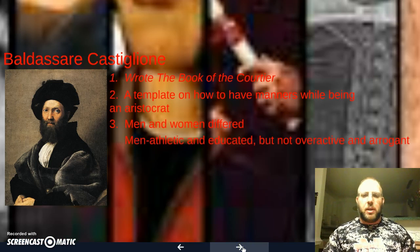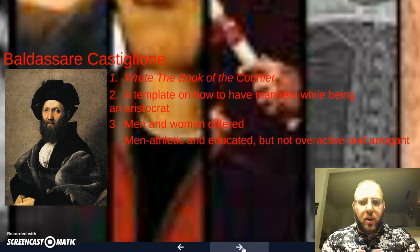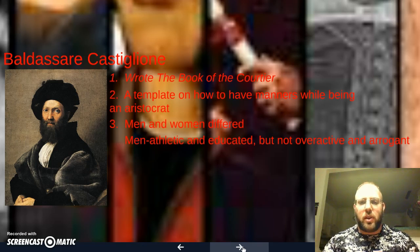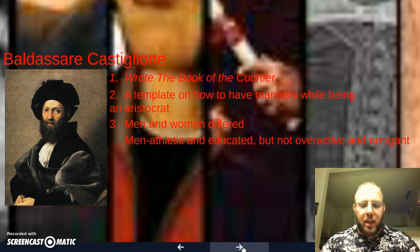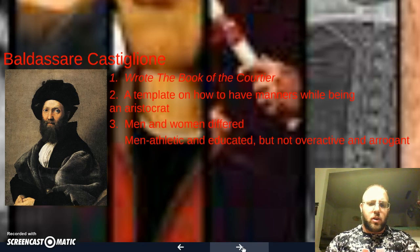For example, a man must be athletic and educated, must be able to hunt and participate in games, while also being very well-educated, very intelligent, very able to speak. But you don't want him to be overactive or so fit that he pushes people away, and you definitely don't want him to be arrogant. This is the idea of having a quiet confidence — treating others very well, treating a lady well, treating other nobles well. You should be able to talk about politics, religion, and play an instrument, going back to that individualist Renaissance idea, but you don't want to be so good at it that you're overly arrogant and push people away.